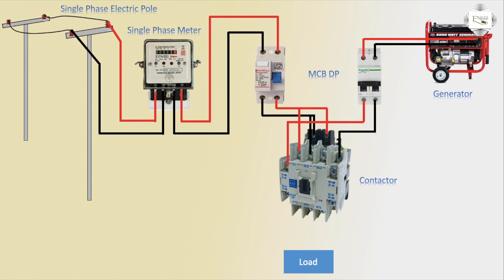DP connection load — generator line or PDP line outgoing to load positive and negative. PDP or generator line DP connection short outgoing to load. PDP line controls the magnetic contact: PDP line on, magnetic contact on — magnetic contact L1, L2 line supply on.